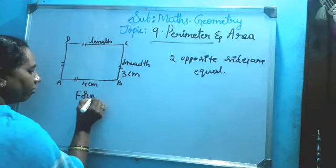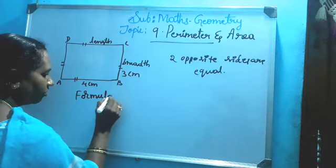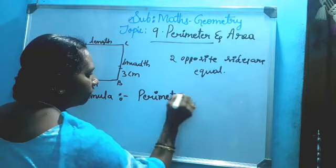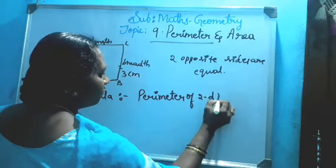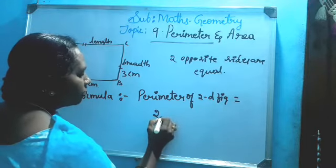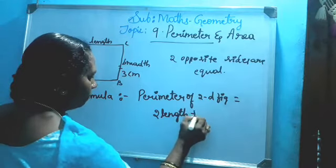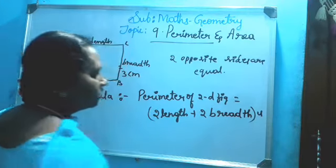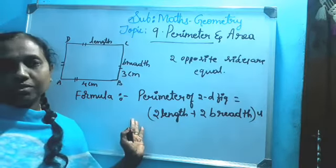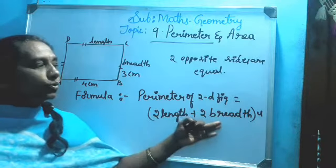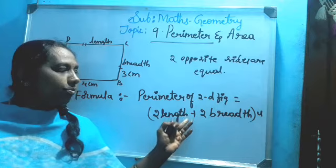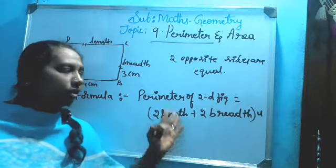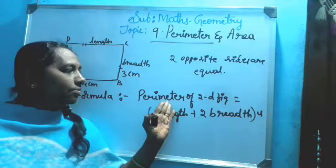Once again, perimeter is the distance around a two-dimensional shape. So see, the formula of perimeter: Perimeter of two-dimensional figure is equal to 2 length plus 2 breadth. Perimeter is expressed in the unit - whatever unit we use to measure.